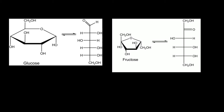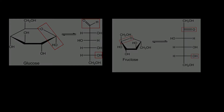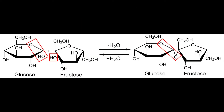In the video about the monosaccharides, the formation of a hemiacetal out of a keto or aldehyde group with the hydroxy group was mentioned. The hemiacetal is able to react with another hydroxy group, which could be provided by another monosaccharide, to form an acetal group which is present in disaccharides.